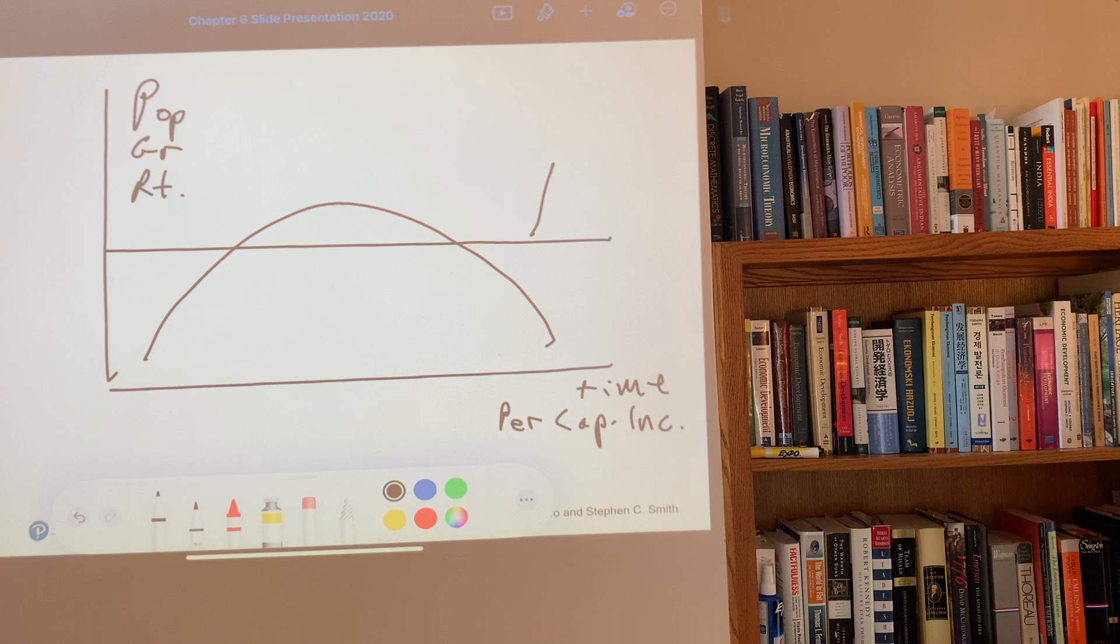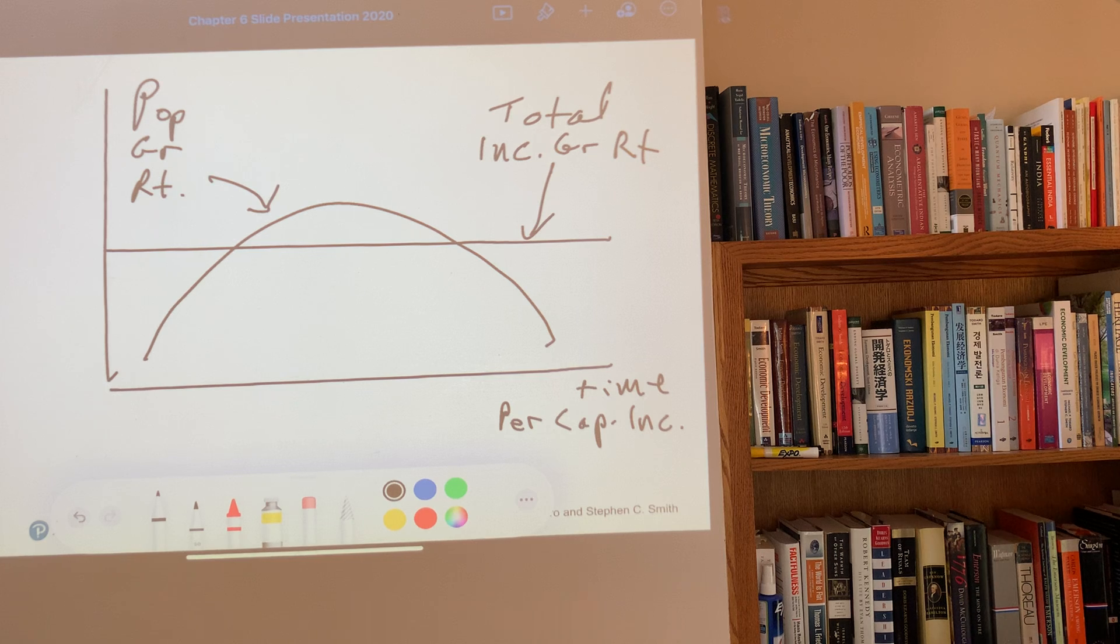So this is the total income growth rate. This is the population growth rate now. And on the y axis, we have some combined growth rates.